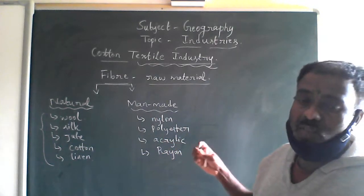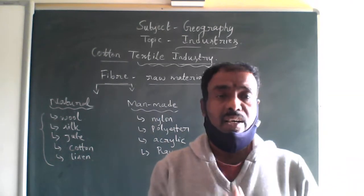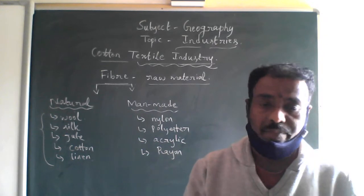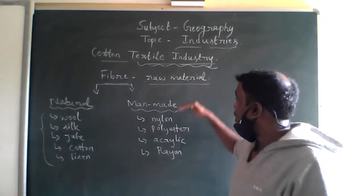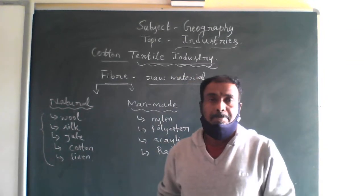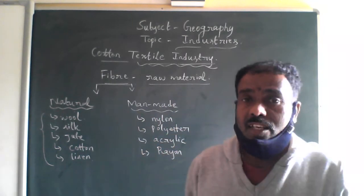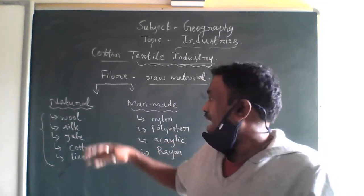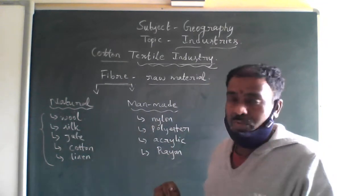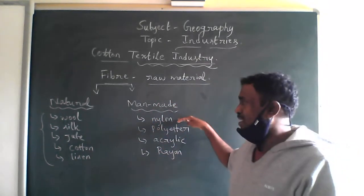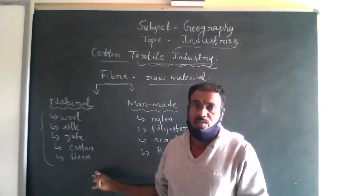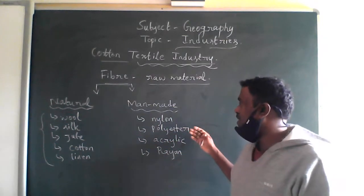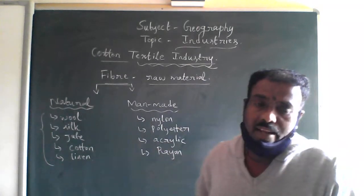To summarize: the textile industry can be classified on the basis of the raw materials used. Fibers are the raw materials for the textile industry. Fibers can be natural or man-made. Natural fibers come from sources such as wool, silk, jute, cotton, and leather. Man-made fibers include nylon, polyester, acrylic, and rayon.